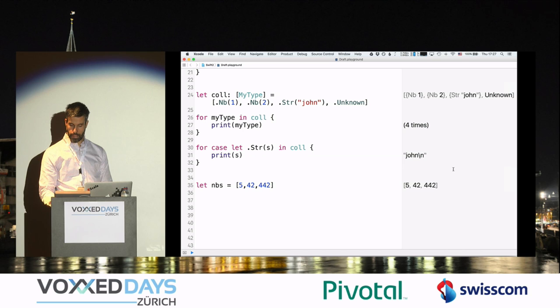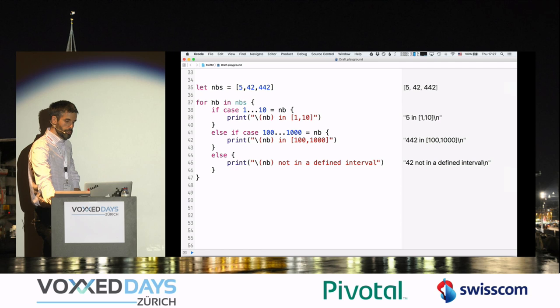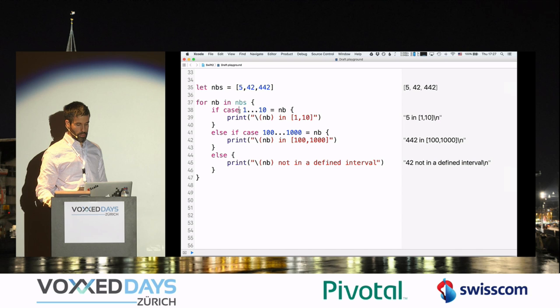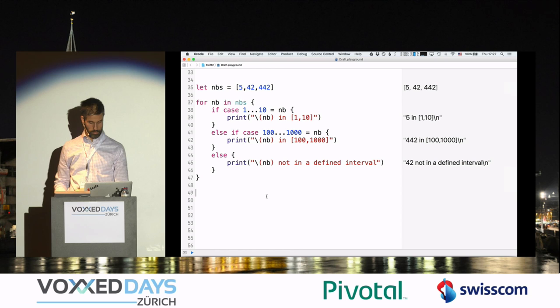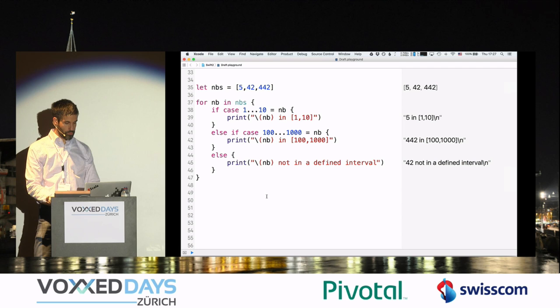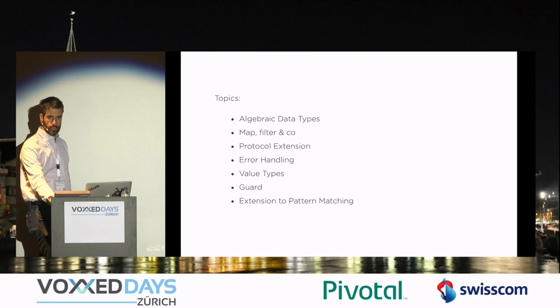I can also pattern match more complicated things. If I define a collection and write code like this: I iterate through the items and pattern match — this time it's a range, so I go inside this part if numbers are between one and ten inclusive, and so on with another range. That would be the new features regarding pattern matching in Swift 2.